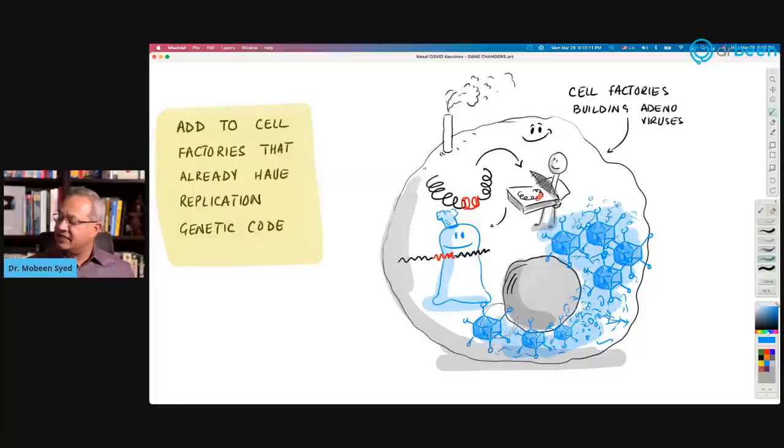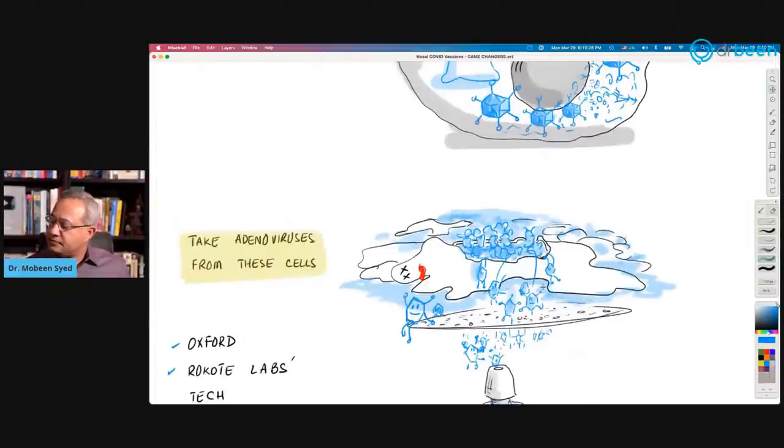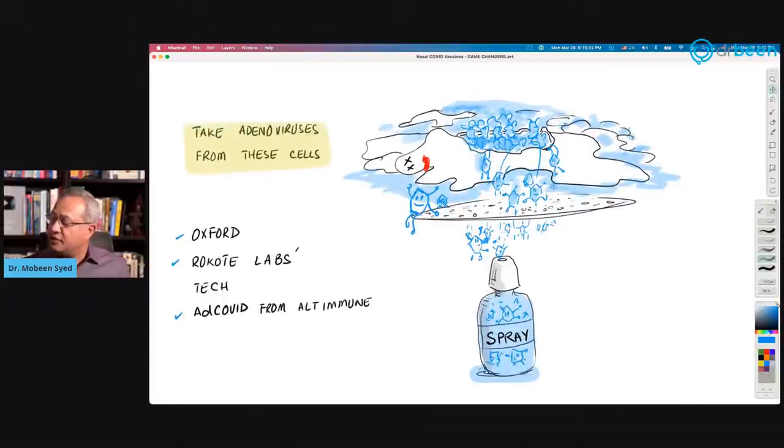Now, these adenoviruses have the DNA in them, but their DNA is replication deficient. They cannot replicate once they are in our body. The problem is how do we get these adenoviruses out of the cell? So we will have to break this cell like an egg and remove the thing of our interest. And that thing is these adenoviruses. This is the vaccine. So what we do is we take these cells, we kill them, and then we have the adenoviruses coming out of these cells.